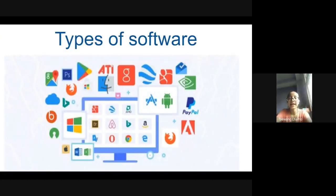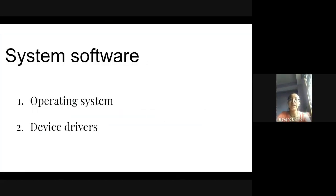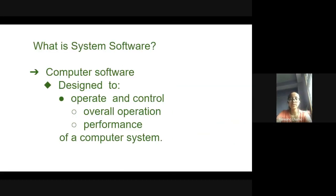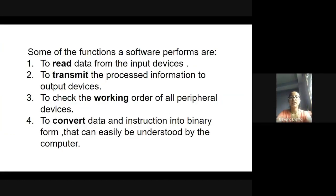Hi, I'm Sivang and I'm going to tell you about types of software. There are two types: system software and application software. Under system software there are two more categories: operating system and device driver. System software is computer software designed to operate and control the overall operation and performance of a computer system.